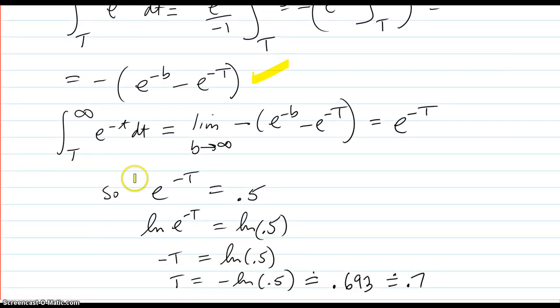So our integral from t to infinity is going to be this limit right here. And as b goes to infinity, this part goes to zero. So I'm just going to get positive e^(-t).